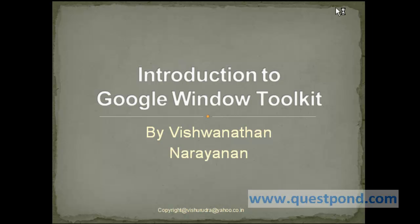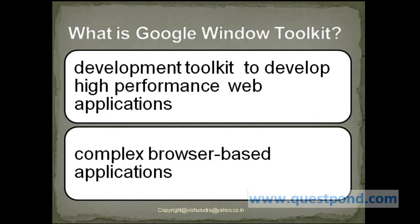Let's try to understand what is Google Web Toolkit. Google Web Toolkit is a development toolkit used to develop high performance web applications. They are very useful in designing very complex browser based applications.